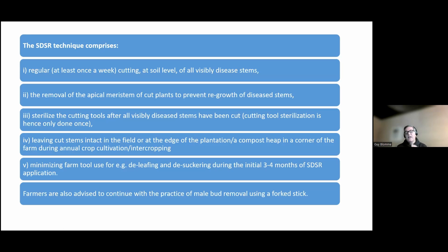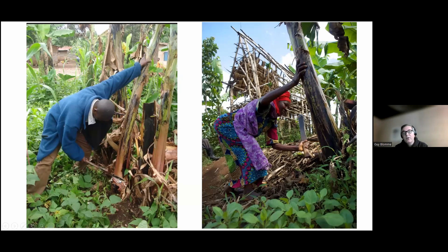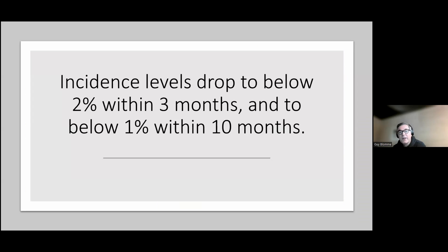Don't cut the stems into small pieces, because each additional cut means ooze can potentially get into the environment or be picked up by insects or browsing cattle. While applying single diseased stem removal, for the first three or four months it's best not to use other tools in your plots for deleafing or desuckering, in order to reduce the amount of inoculum within your plantation. In addition, you have to keep on removing male buds early to prevent insect vector transmission. Be careful not to cut adjacent plants with the machete, as you could potentially infect other plants.